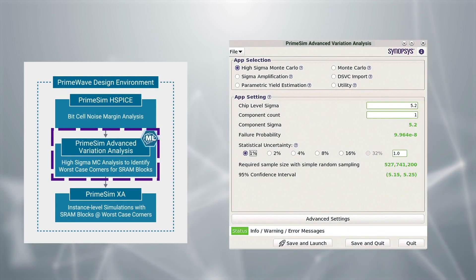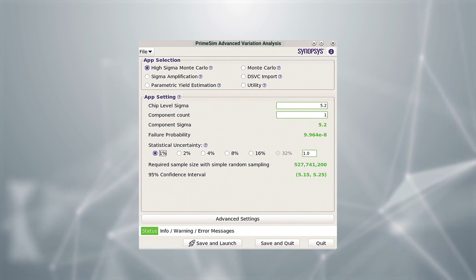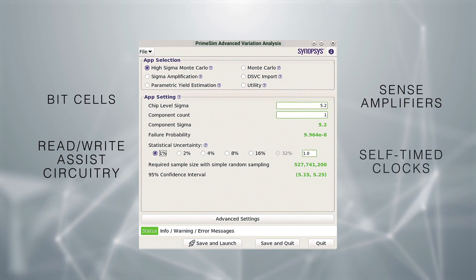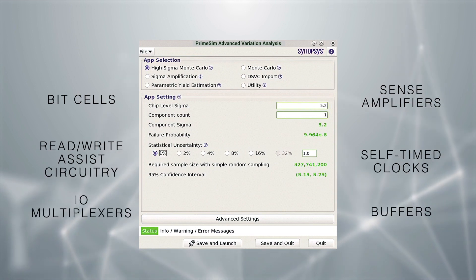Next, PrimeSim Advanced Variation Analysis is used to generate high-sigma models for critical SRAM building blocks, such as bit cells, sense amplifiers, read-write assist circuitry, self-timed clocks, and IO multiplexers and buffers.